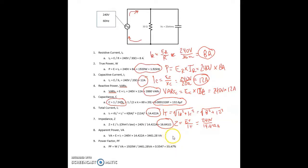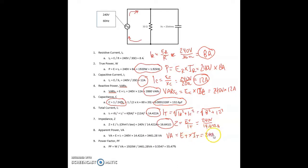For apparent power, we're using the same formula as in the series circuit: volt-amps equals total voltage times total current, equals 240 volts times 14.422 amps, and that equals 3,461.3 volt-amps, or 3.4 kilovolt-amps.